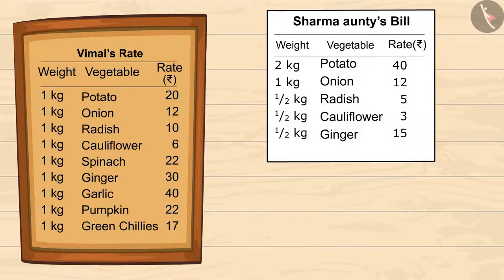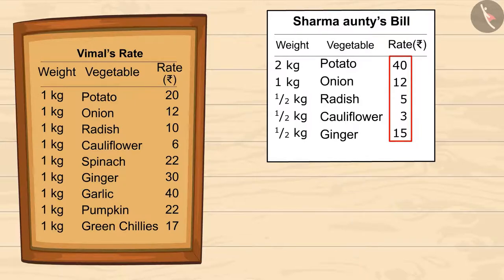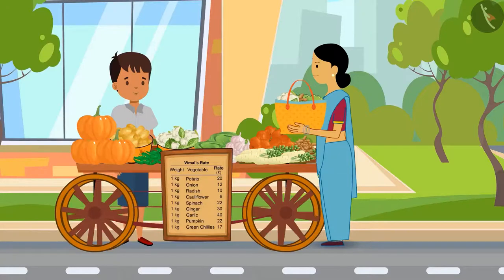So this is the cost of shopping done by Sharma auntie. Now let's add all of this to find out the total price. Kids, you can pause the video to find out the sum. Vimal has already added all the numbers — the total is 75 rupees. Sharma auntie has to give 75 rupees to Vimal.